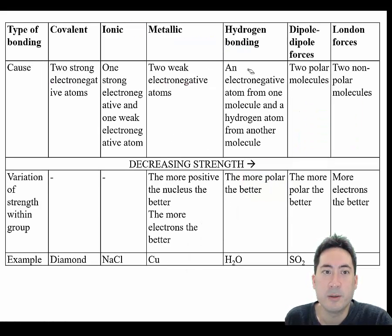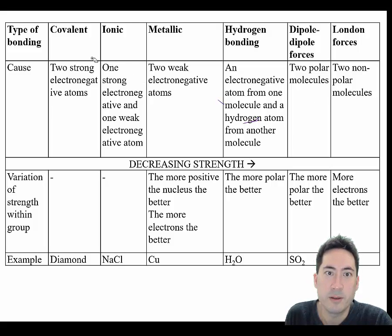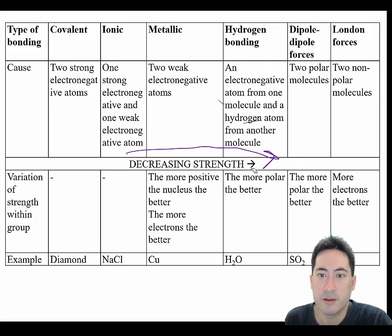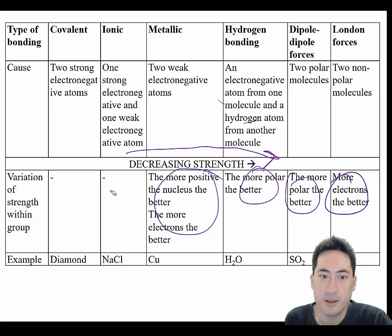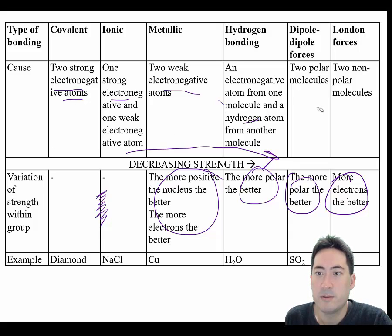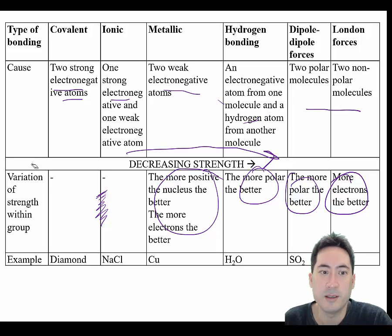Lastly, a very quick overview — not precise definitions, but just to give you a quick summary. We have covalent, ionic, metallic, hydrogen bonding, dipole-dipole, and London forces, decreasing in strength. These are some of the factors that will affect bond strength. There are more details in the previous lessons, so please go back to the other lessons to get the full definitions and full understanding of what affects the strength of each bond.